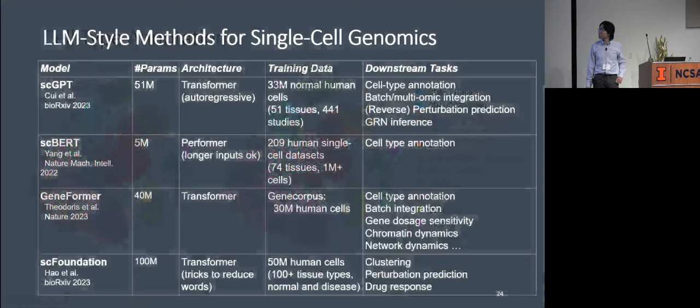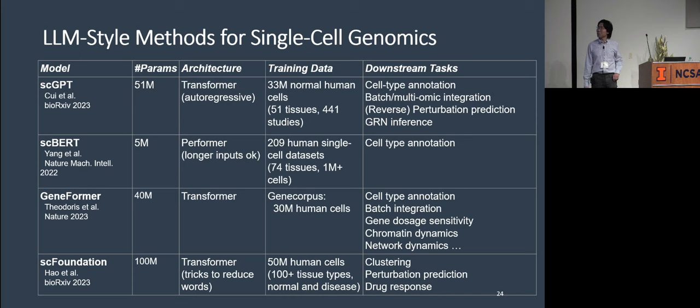And just over the last one year, there has been four, and I think there are actually more models get introduced, also using different architectures from transformer to performer, also have different number of parameters doing different tasks, and also trained on different data. And they all find that their methods are good at some aspects and might be a little bit worse than others on other aspects.